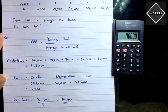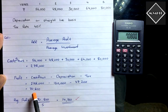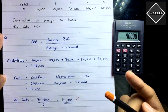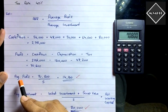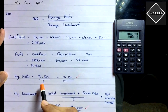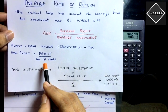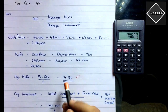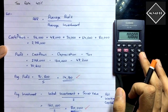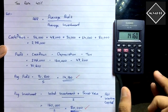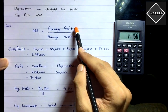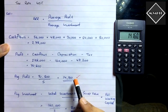This total profit of 70,800 is for all five years. To find the average annual profit, divide by the number of years: 70,800 / 5 = 14,160. So average profit = 14,160. That completes the first part of the calculation.